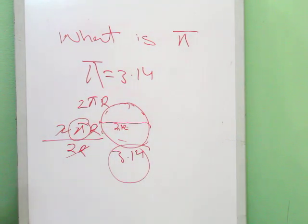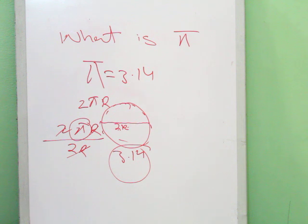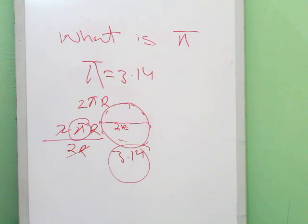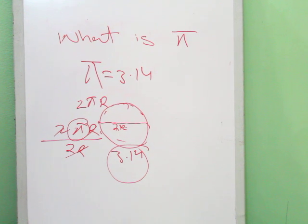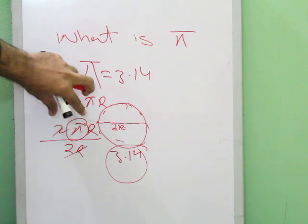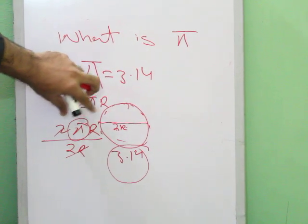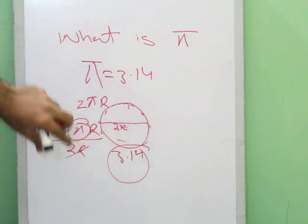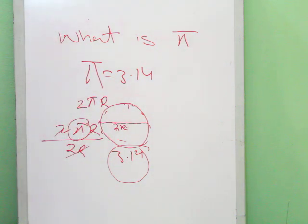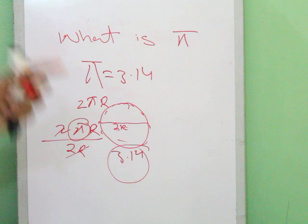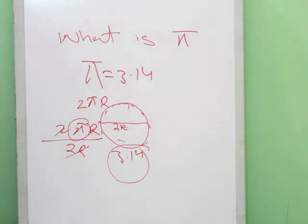Whether it is a small circle or a large circle — be it the Sun or any other circle — the result when we divide the circumference of that circle by its diameter, we always get the value 3.14. This value is always constant.